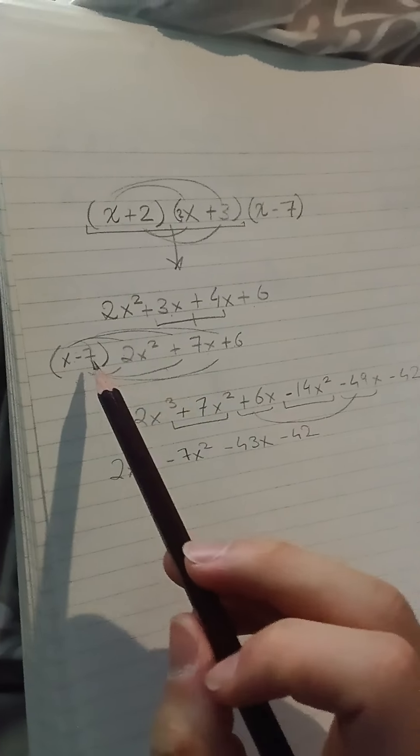negative 7 times 2x squared is negative 14x squared, negative 7 times 7x is negative 49x, and negative 7 times 6 is negative 42. From here,